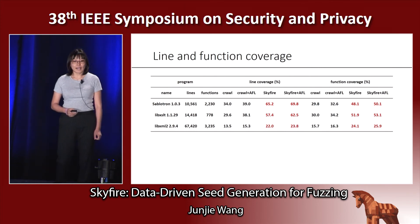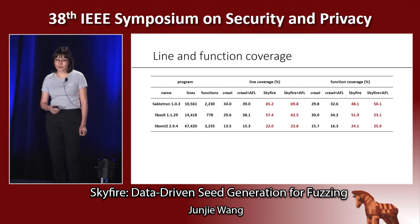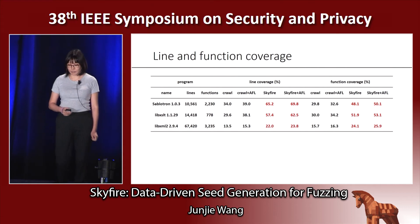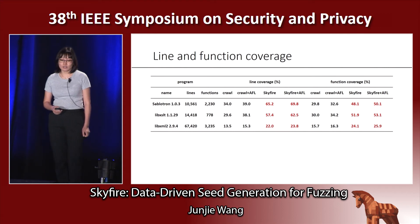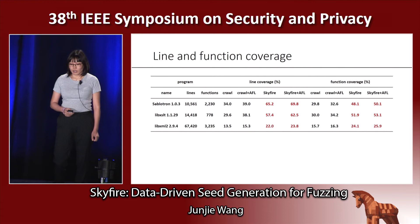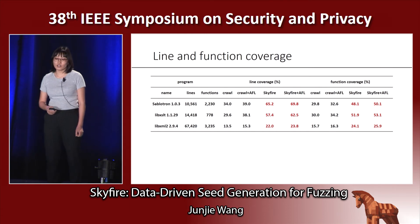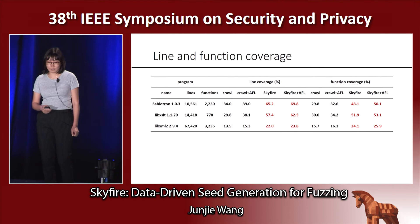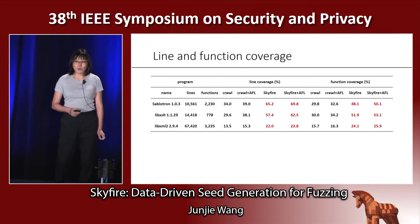Coverage is another important metric to evaluate a fuzzing approach. We calculated the line coverage and function coverage of four types of setups. We can see our crawled samples initially covered 34% of Sablotron, and after a span of fuzzing, AFL increased the line coverage to 39%. Our test cases generated by SkyFire initially covered 35% of Sablotron, and our generated test cases already had a much higher line coverage than the crawled plus AFL setup.